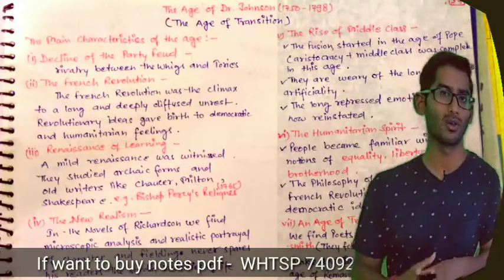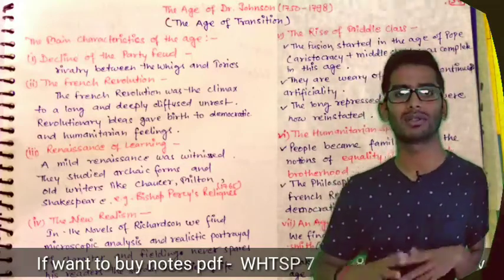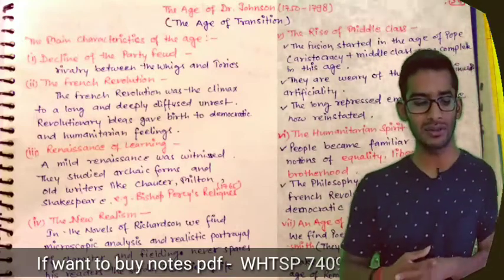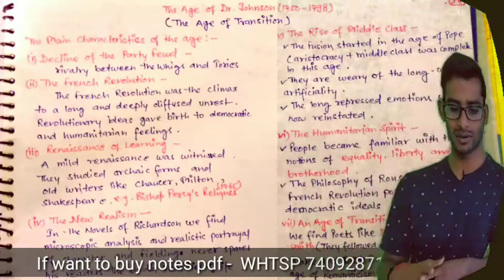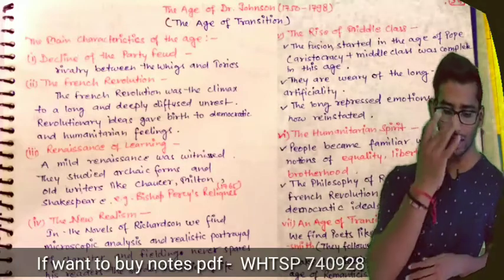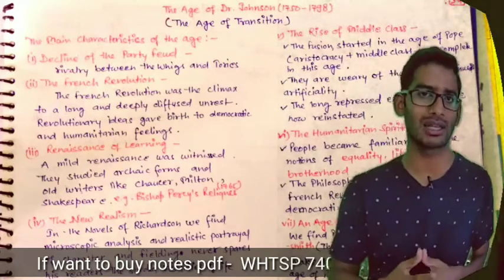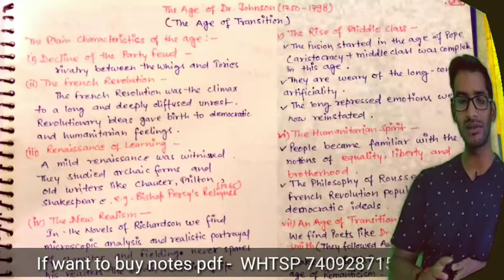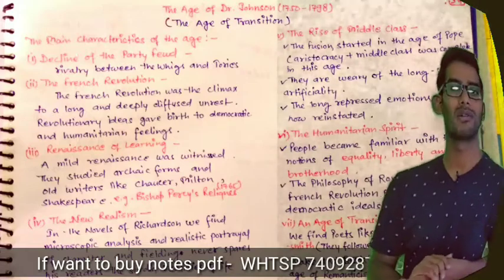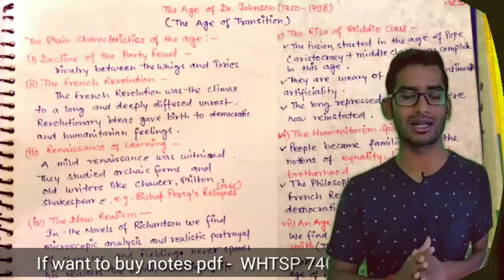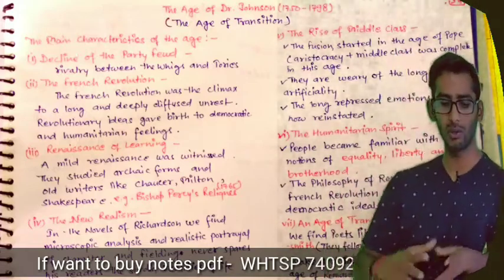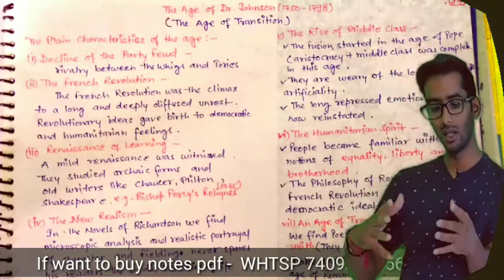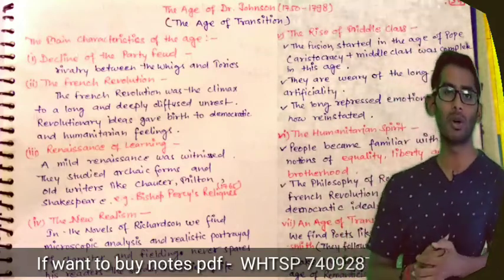The first main characteristic was the decline of the party feud. We know that there were two parties — the Whigs and the Tories. The Tories were supporters of the King, and the Whigs were opposing them and were in support of Parliament.